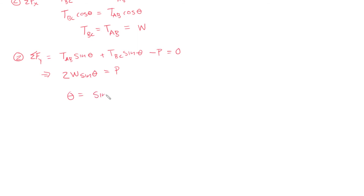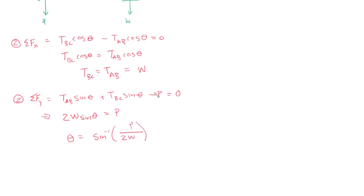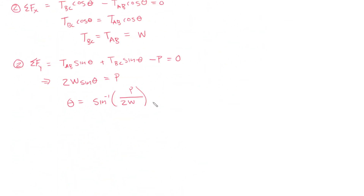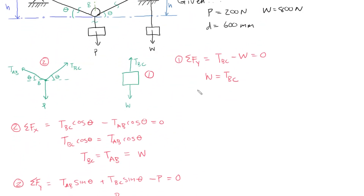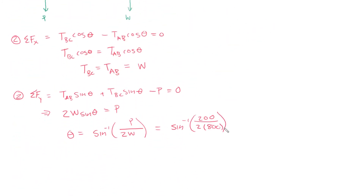The sum of forces in Y gives TAB·sin(theta) plus TBC·sin(theta) minus P equals zero. Since TBC equals TAB equals W, this simplifies to 2W·sin(theta) equals P. We can find the angle using arcsin of P over 2W, which gives an angle of 7.181 degrees.